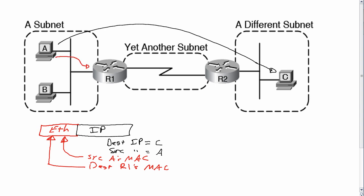When R1 gets the frame, it says: this is addressed to me — it's my MAC address as the destination MAC. As part of the routing process, R1 strips off the Ethernet header and the trailer. So there's no more Ethernet header and trailer to worry about, and that IP packet sits in memory at router R1.